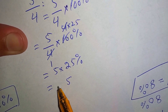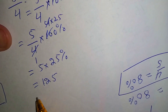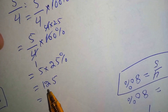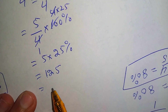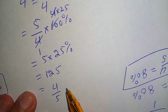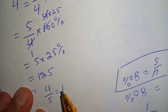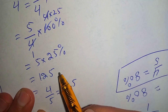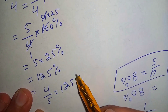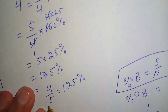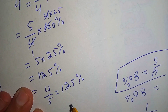The answer is 125, so 5 over 4 is equal to 125 percent.